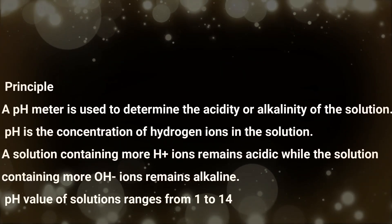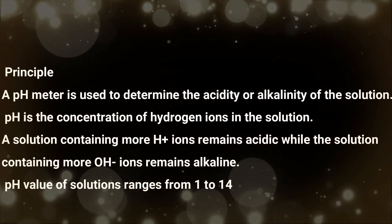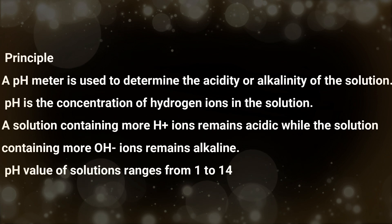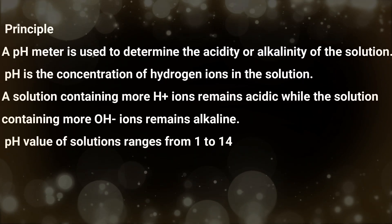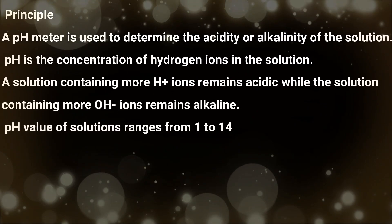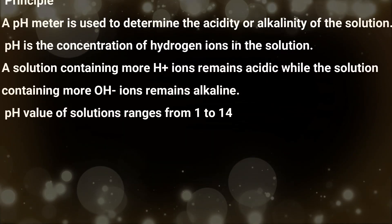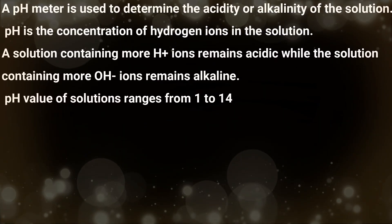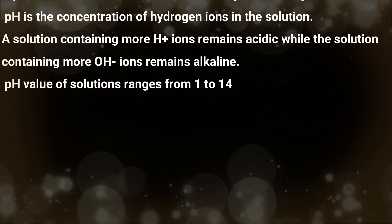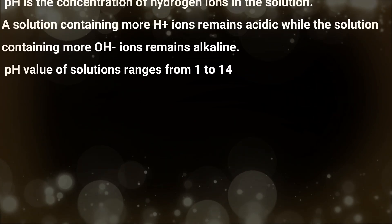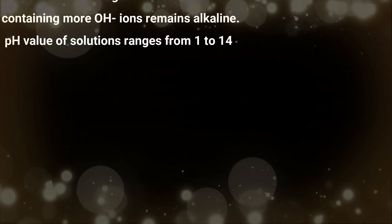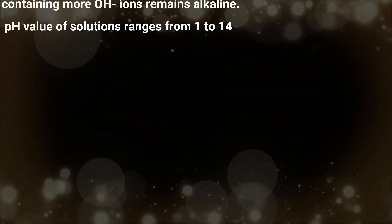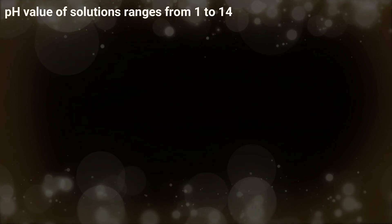The pH meter is used to determine the acidity or alkalinity of a solution. pH is the concentration of hydrogen ions in the solution. Solutions containing more H⁺ ions are acidic, while solutions containing more OH⁻ ions are alkaline. pH values range from 1 to 14.